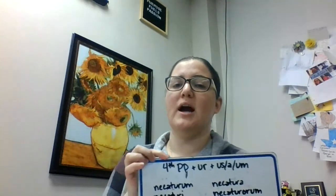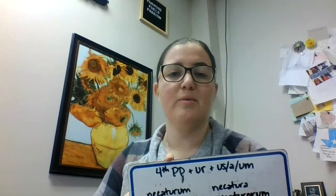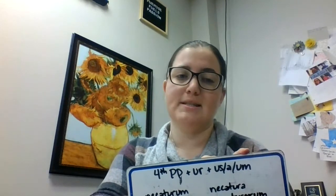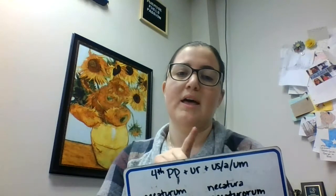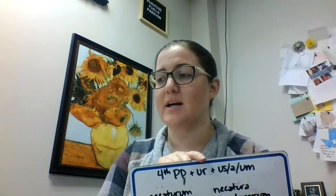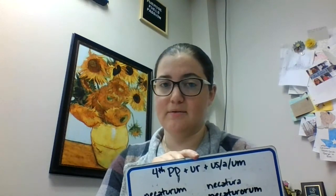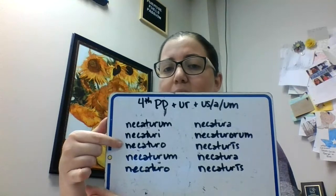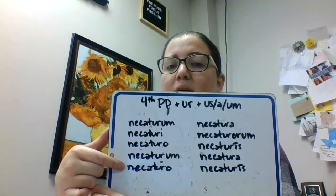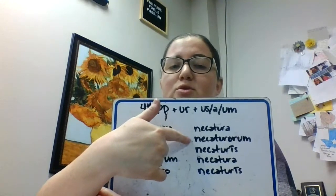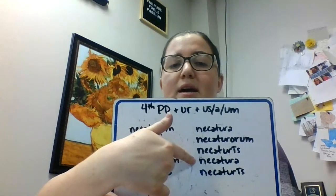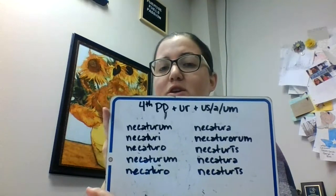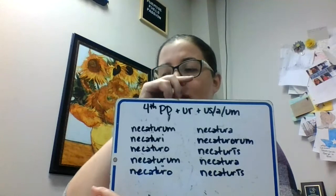On to our next one: the future active participle. This one was for neco/necare, so we need our fourth principal part, which is necatus — take off that 'us', so we have 'necat'. We add 'ur' to that, and then our first and second declension endings: us/a/um. That 'ur' is what tells us it's future active, because otherwise it would look the same as our perfect passive. Since it's neuter, we have: necaturum, necaturi, necaturo, necaturum, necaturo, necatura, necaturarum, necaturis, necatura, necaturis. We're getting those neuter endings — the 'um' and then the 'a'. This still uses our first and second declension endings; we just need to add that 'ur' in the middle.